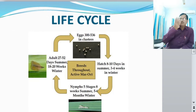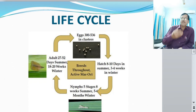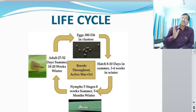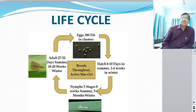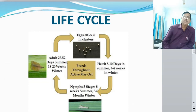In one year, this pest completes three to four generations. This is a schematic representation of the life cycle stages of Pyrilla purpurcilla - egg stage, then nymph with five instars (first to fifth instar), and then the adult. The rate of development from hatching to adult conversion is 20 to 52 days in summer and 18 to 20 weeks in winter.